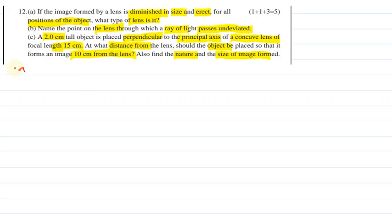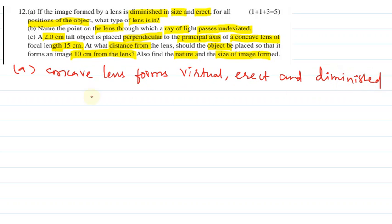Let us start with part A. The lens is a concave lens. A concave lens forms virtual, erect and diminished image.